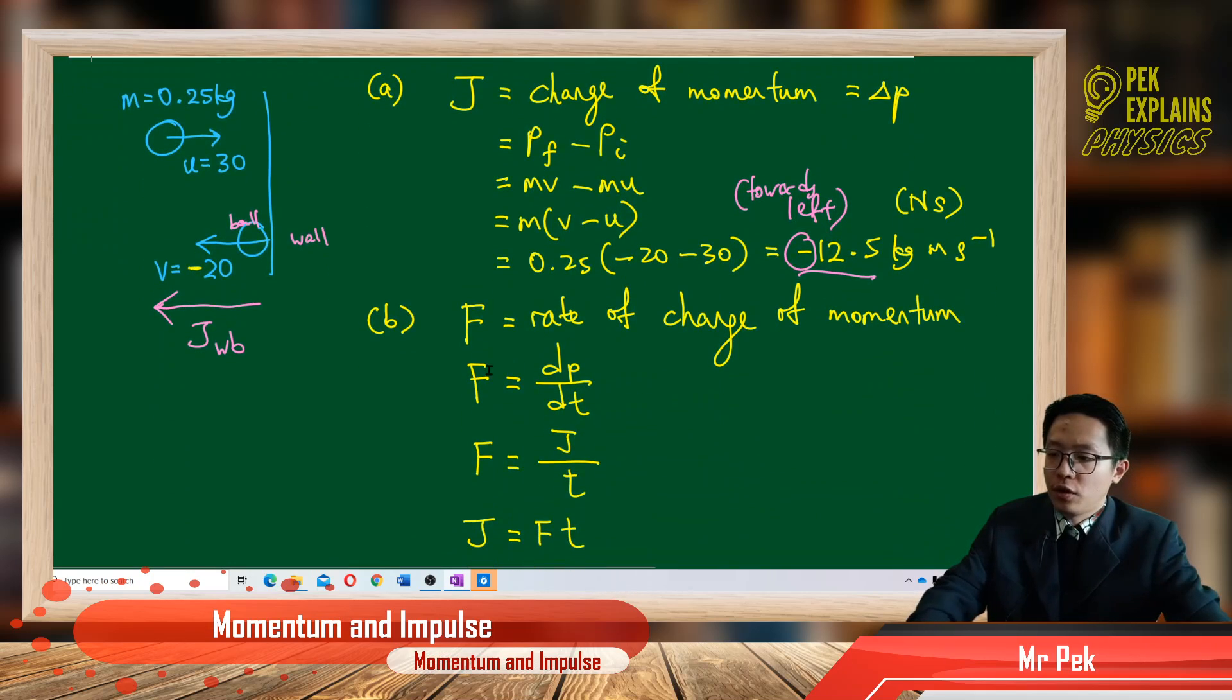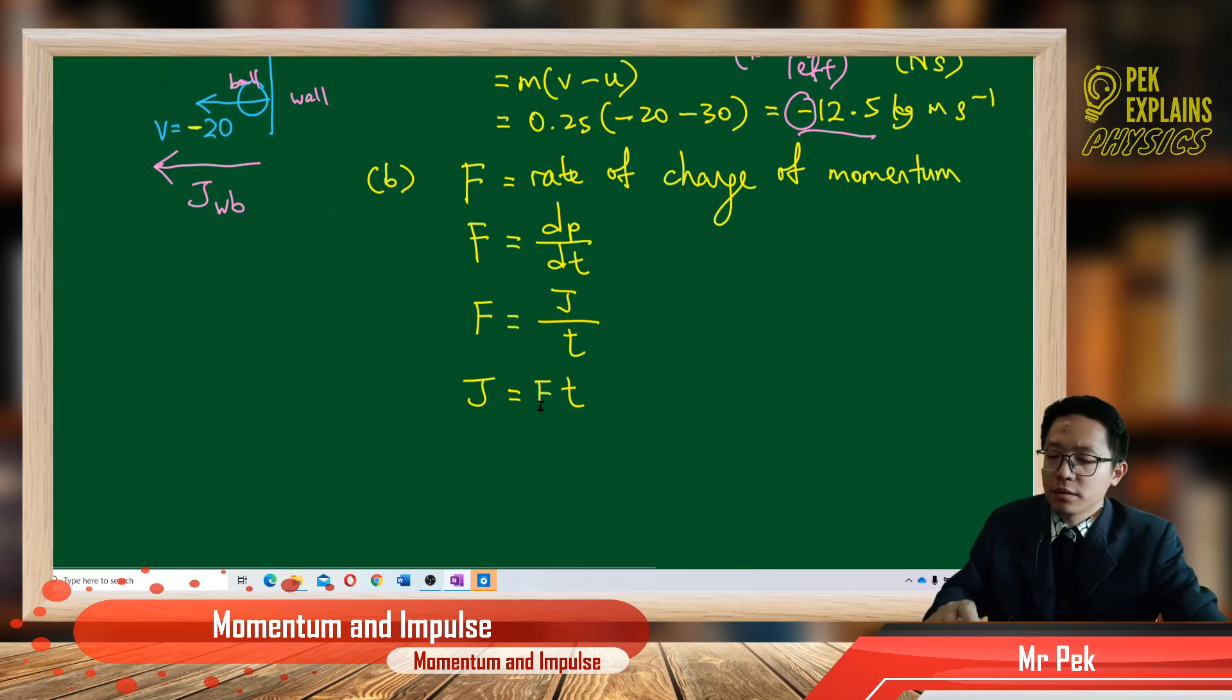Impulsive force is actually the rate of change of momentum, or dp over dt. So dp is the change of momentum. This delta p is the change of momentum, or it's called the impulse. So dt is the time taken. When t multiplied above, we have impulse equal to ft.